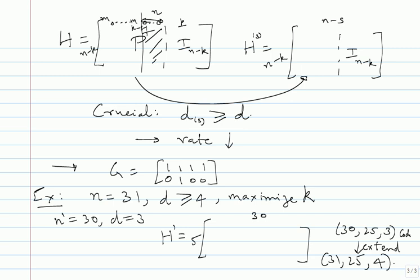The next topic is bounds that relate N, K, and D. These quantities are interrelated — D measures how far apart code words are, and if you think geometrically, code words are like stars and you draw spheres of radius T around each. Those spheres must not overlap. Increasing T (error-correcting capability) forces the number of code words to decrease. We will derive simple bounds based on these ideas.